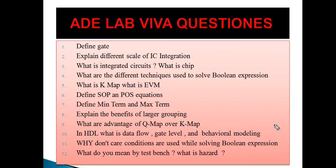In HDL, what is data flow, gate level, and behavioral modeling? Gate level means we represent the circuit by directly calling gate functions. Data flow modeling means instead of gate level, we use statements like assign to execute the logic. Behavioral modeling means we use statements in sequential order — for example, if-else statements — that execute sequentially. That is called behavioral modeling.